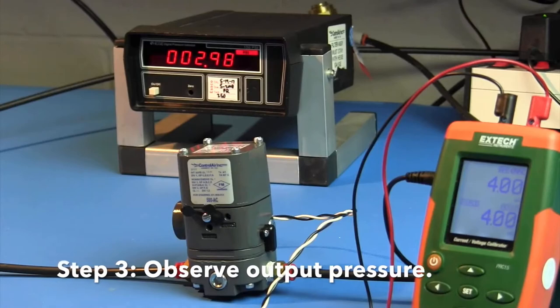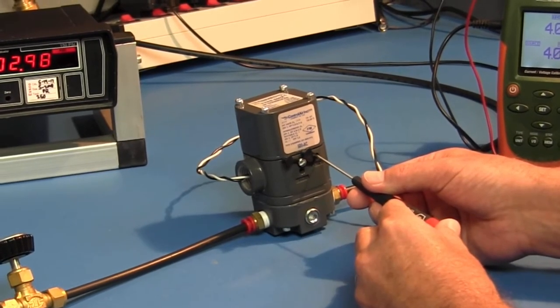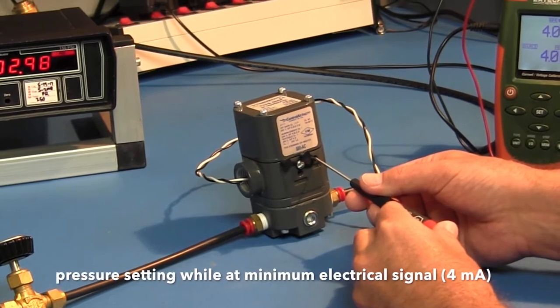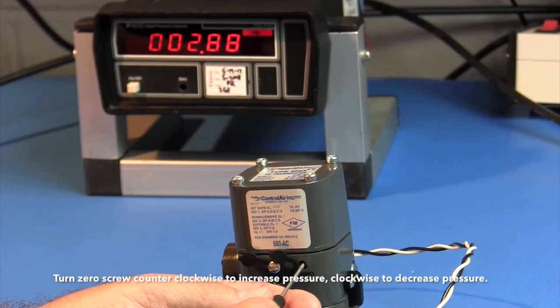Step 3. Observe the output pressure. Adjust zero screw until reaching minimum output pressure setting while at minimum electrical signal. Turn zero screw counterclockwise to increase pressure, clockwise to decrease pressure.